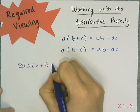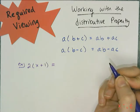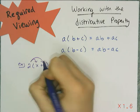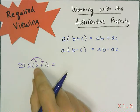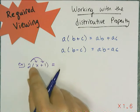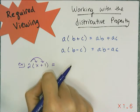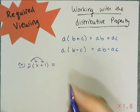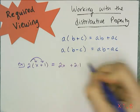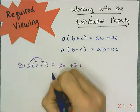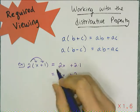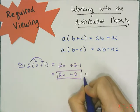The distributive property is kind of like sprinkling. I want to sprinkle the 2 over everything inside the parentheses, because the alternative — combining the x and the 1, following order of operations — is to just multiply everything inside the parentheses by what's outside. So I get 2 times x plus 2 times 1, and that's the distributive property. Then I do the multiplication and get 2x plus 2.